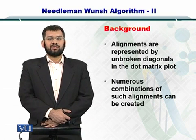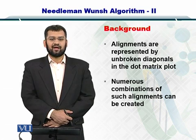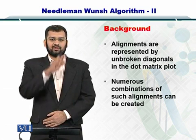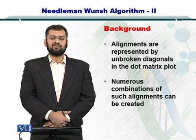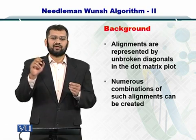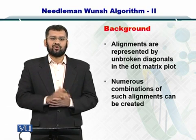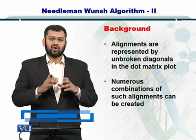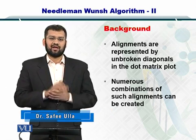You already know that in the dot matrix alignment diagrams, the diagonals represented alignments between the top and the left sided sequences. And of course you could have multiple such alignments as we saw in our previous examples. So the point is how to make an optimal combination of these alignments.